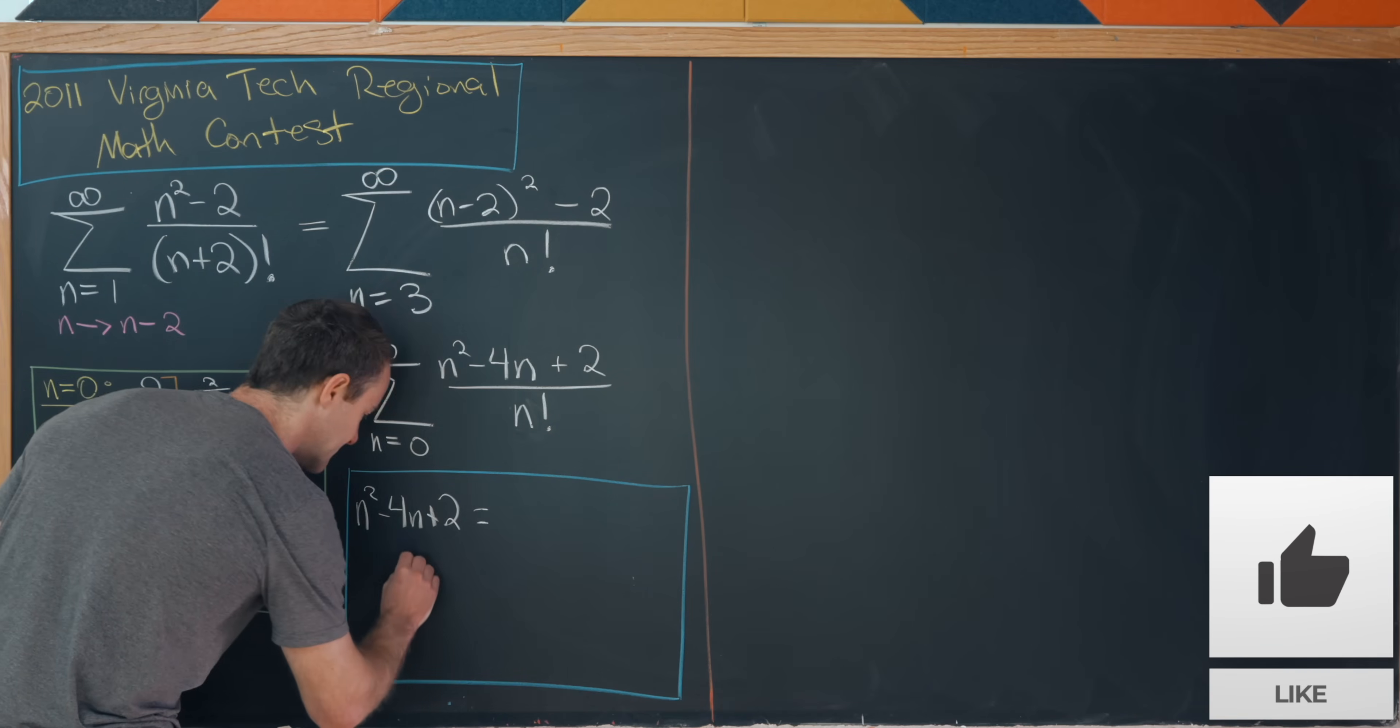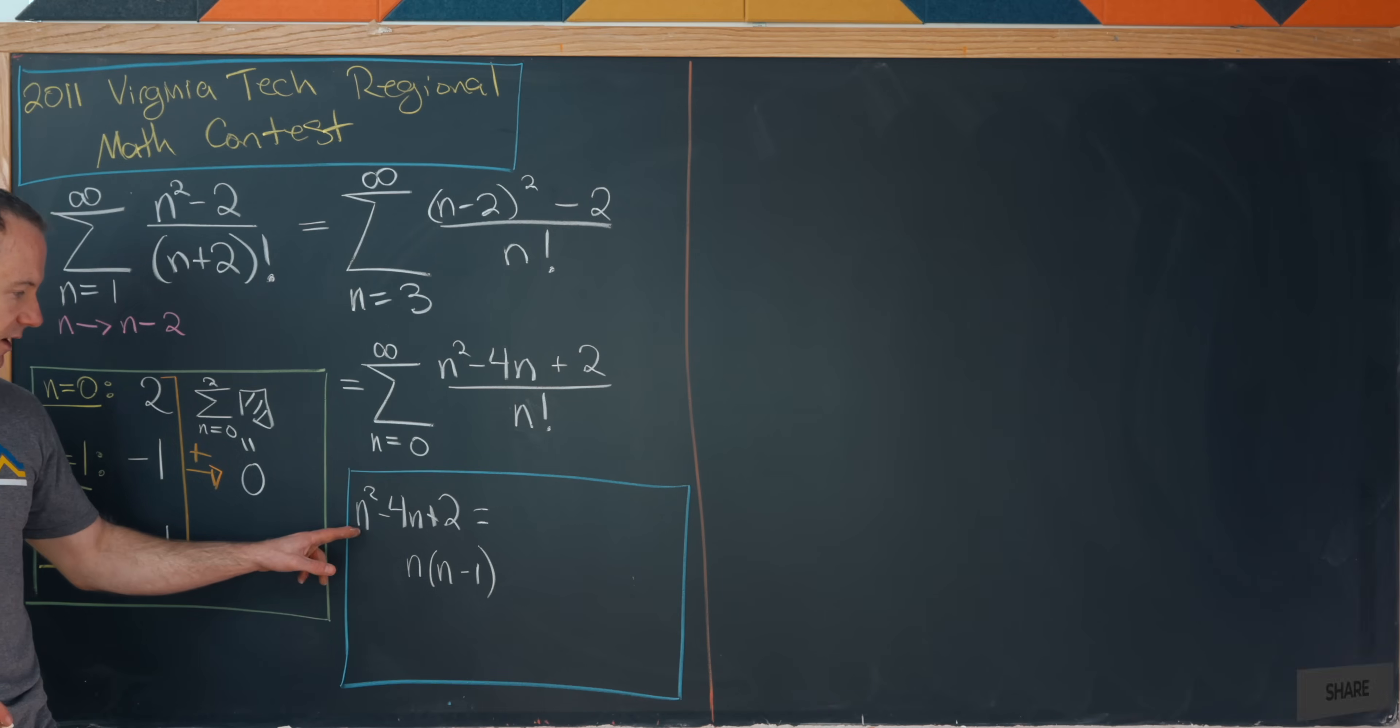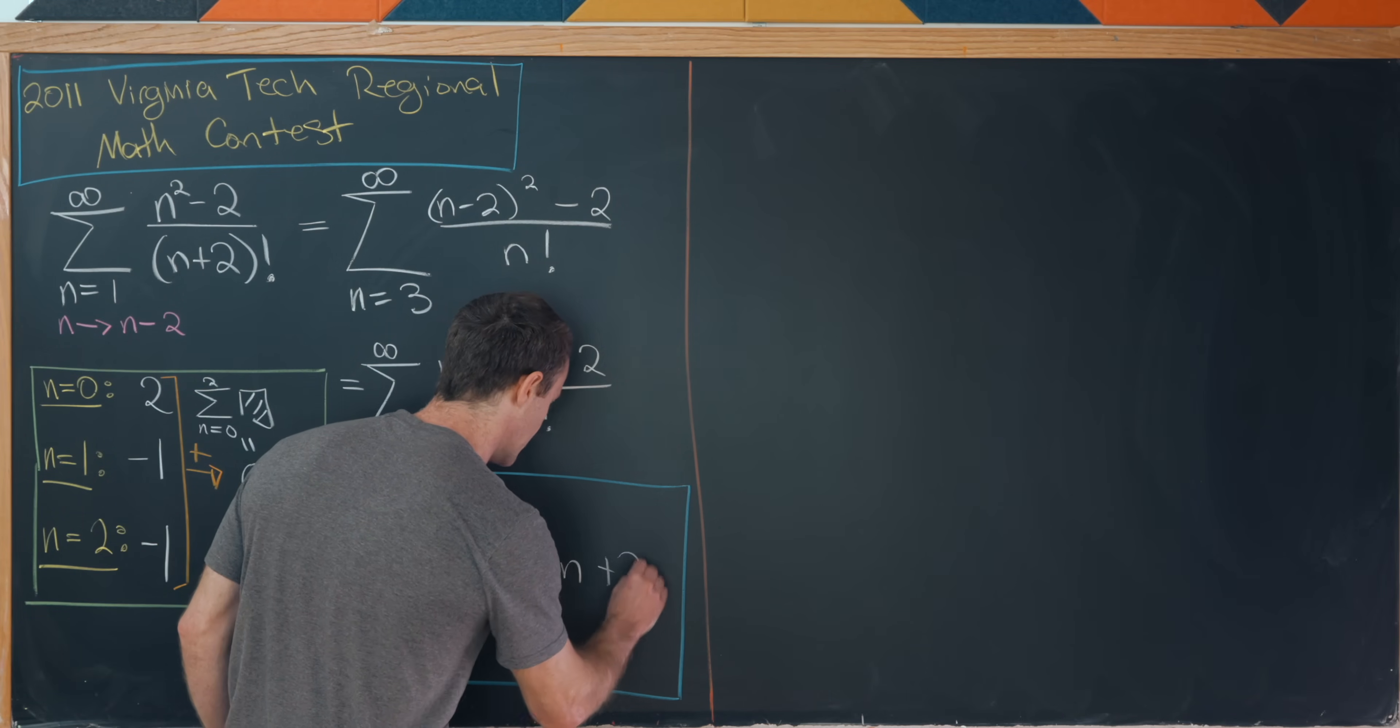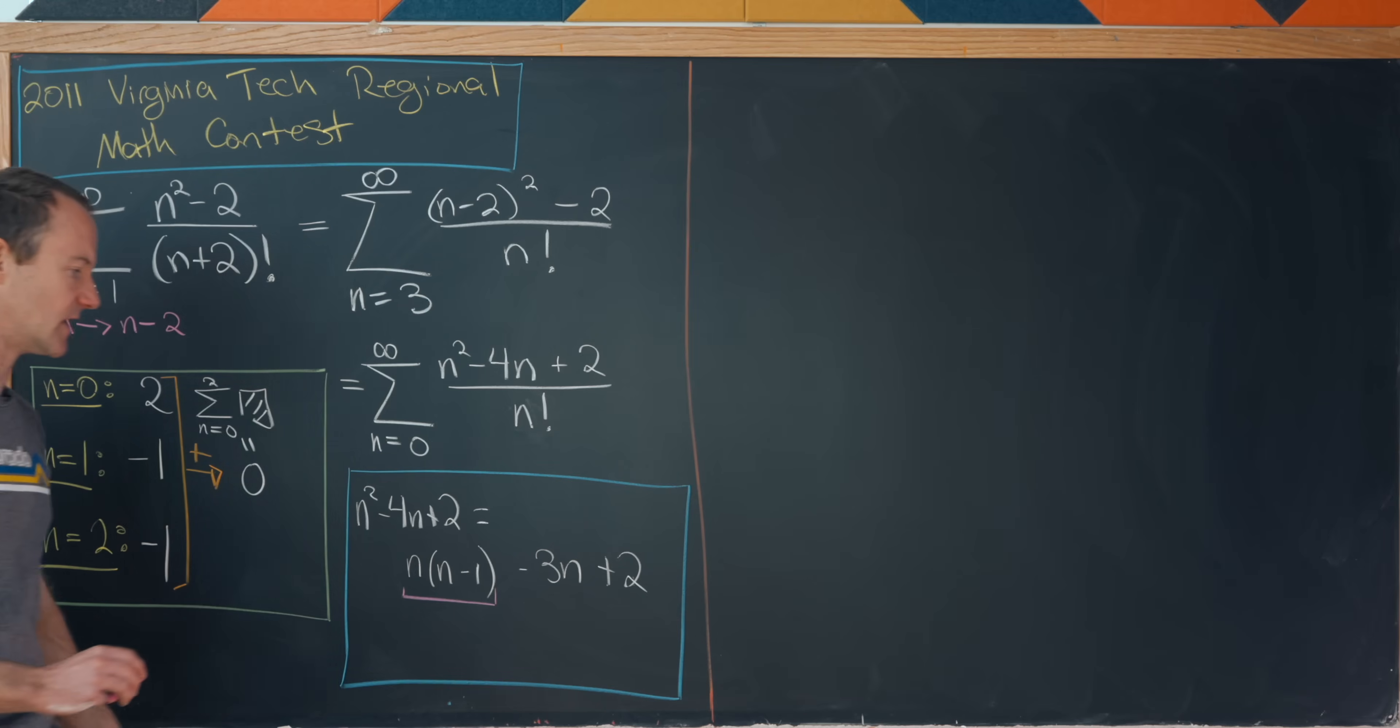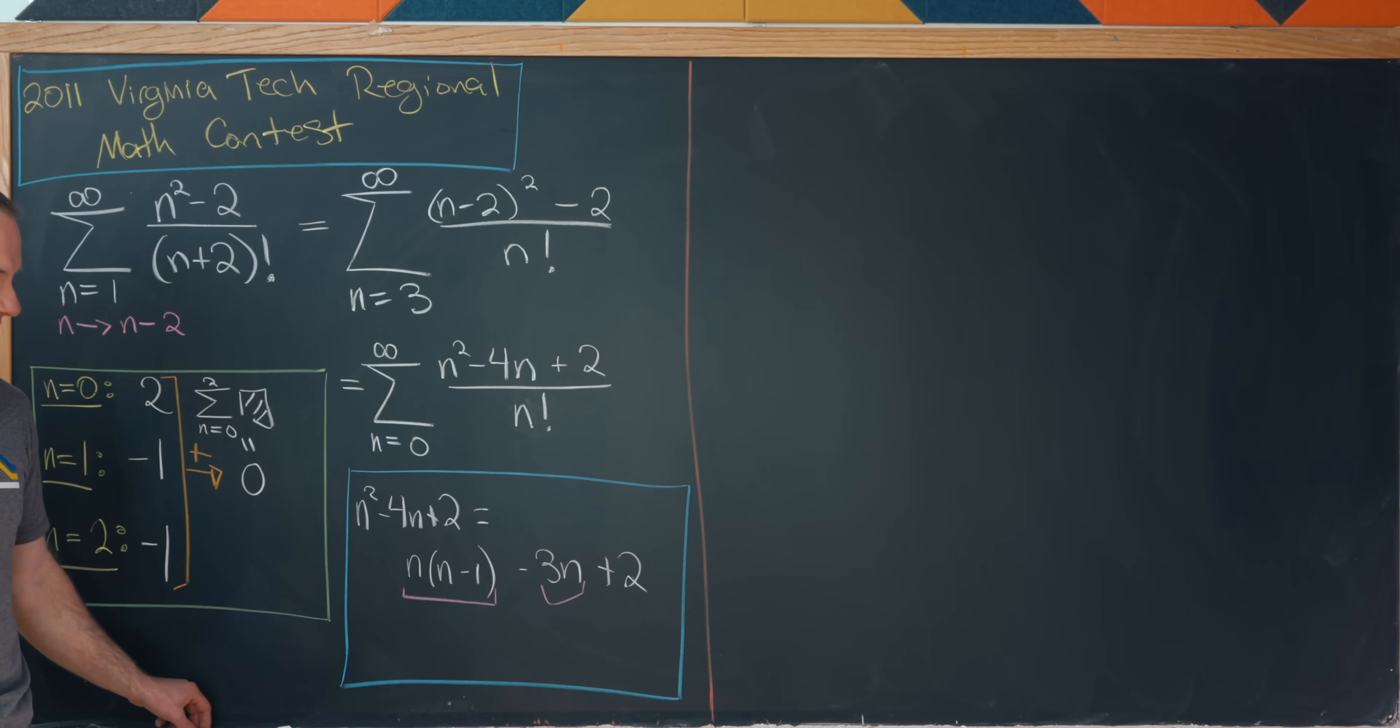So let's write this as n times n minus one. So that'll do our n squared, and that'll give us a minus n. But we've got negative three more n's. So that means we need to subtract another three n, and then we will add two. So I think that's maybe a good way to visualize the numerator.